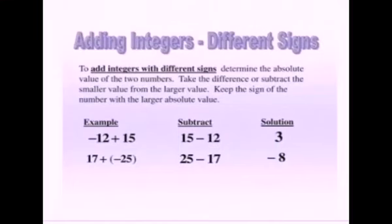Adding integers. To add integers with different signs: determine the absolute value of the two numbers, take the difference by subtracting the smaller value from the larger value, and keep the sign of the number with the larger absolute value. In this example, minus 12 plus 15 — both signs are different, so we subtract 15 minus 12. We get the answer 3, positive 3, because the larger value is plus 15. So the answer is positive 3.